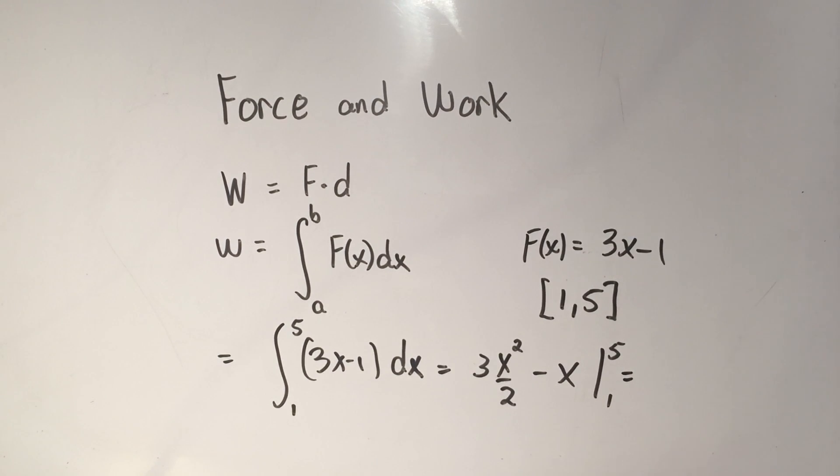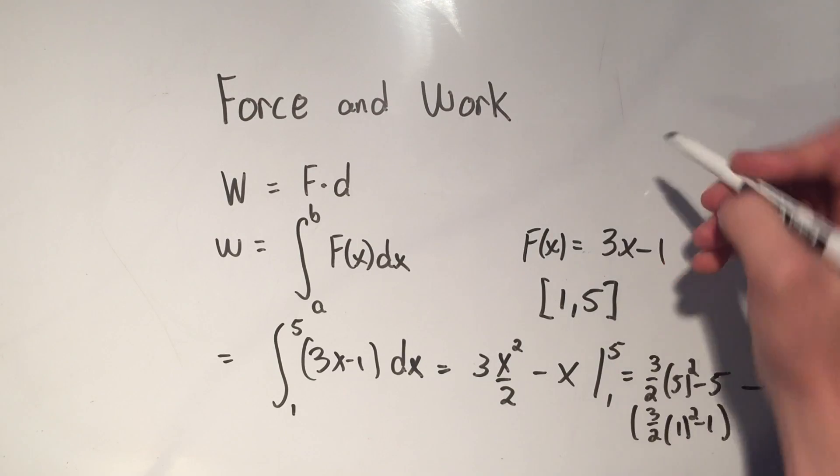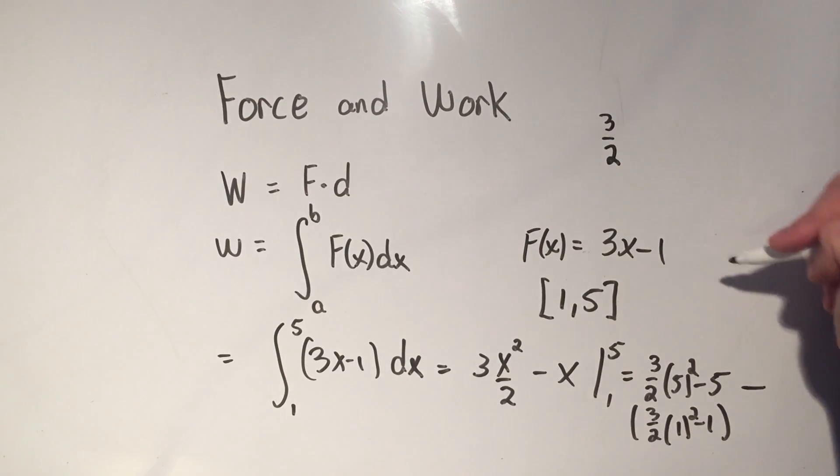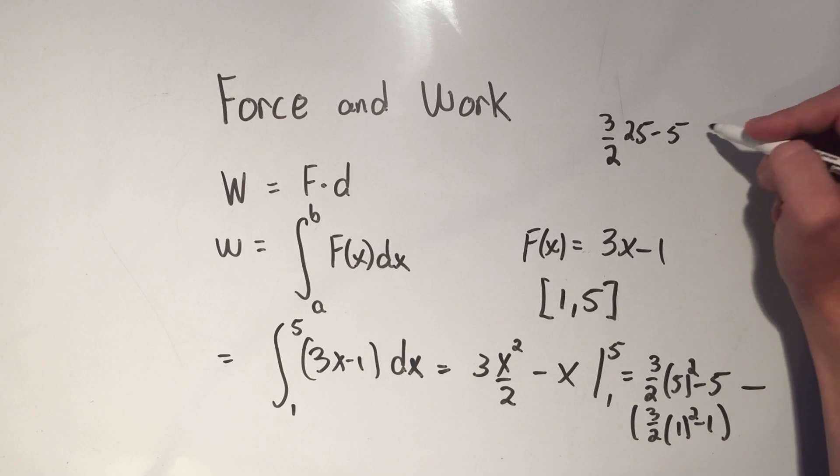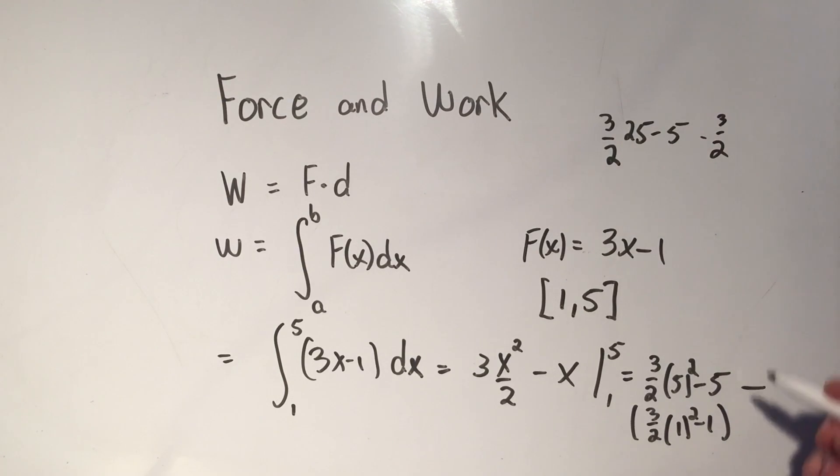I just plug in the upper limit, plug in 5, minus plug in the lower limit, plug in 1. Now I can evaluate this thing. Let's see, that's 3 halves, 5 squared is 25, minus 5, minus 1 squared is 1, so that's minus 3 halves, and I have minus minus 1 is plus 1.